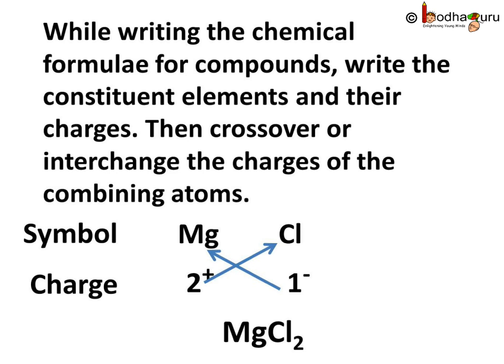In case you know the charges of combining ions, then while writing the chemical formula for compounds, write the constituent elements and their charges, then cross over or interchange the charges of the combining atoms. Here we have magnesium and chlorine. The charge on magnesium is 2 plus and on chlorine is 1 minus. Now we interchange the charges, and we get the compound as MgCl2, which is magnesium chloride.